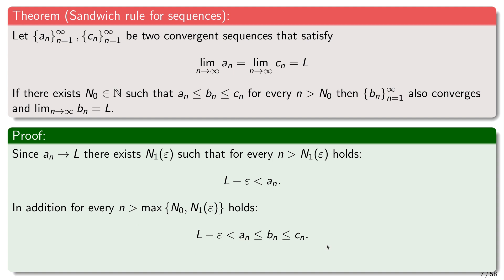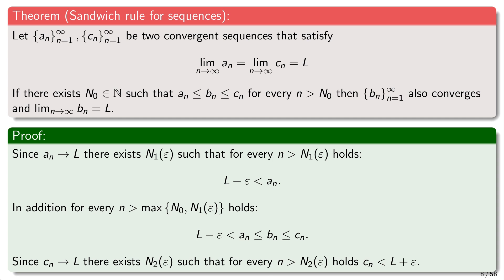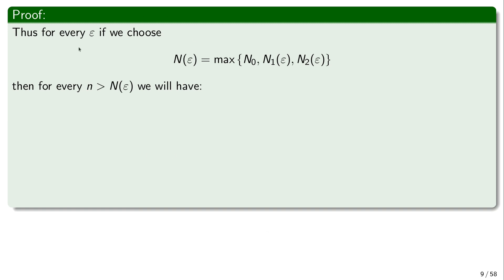Now, since c_n approaches limit L, there exists an initial number N2 such that for every n greater than N2, c_n is smaller than L plus epsilon — that's the right part of the inequality. We also know c_n is greater than L minus epsilon. So now we need to choose N(ε) for the sequence b_n to be the maximum of the three numbers N0, N1, and N2.